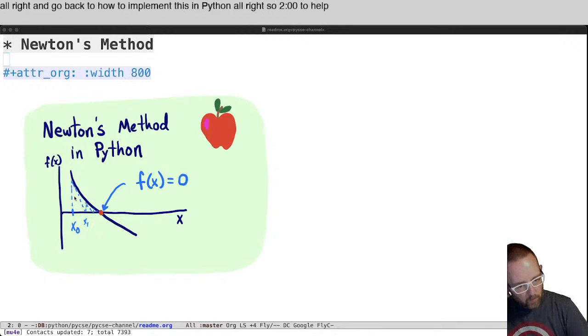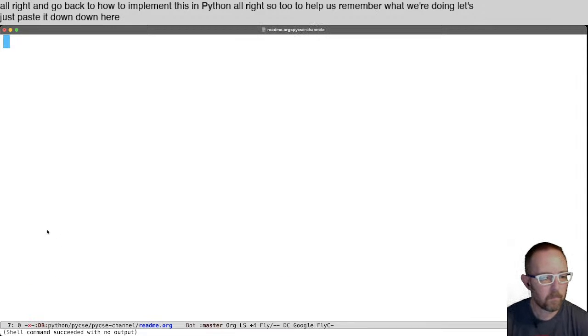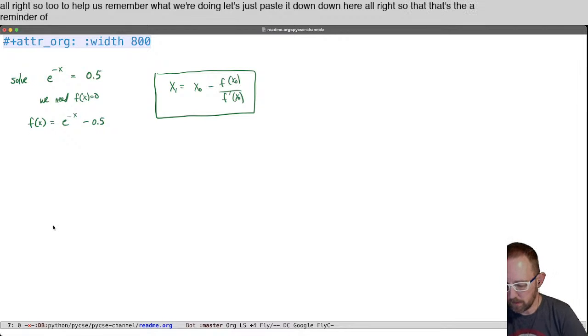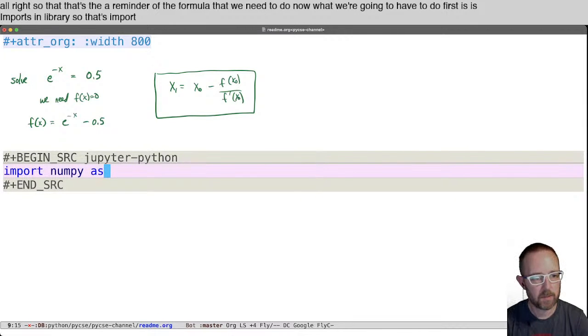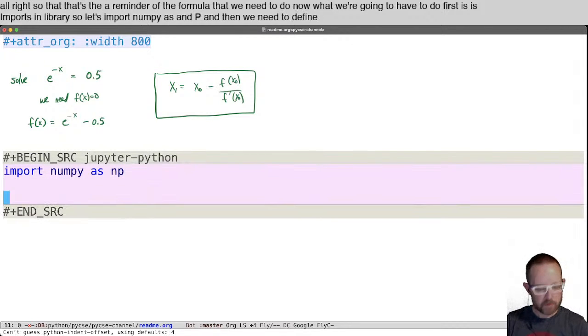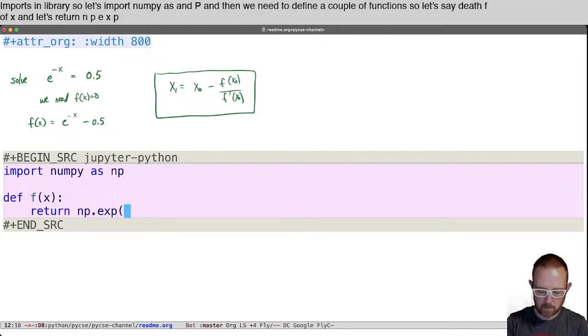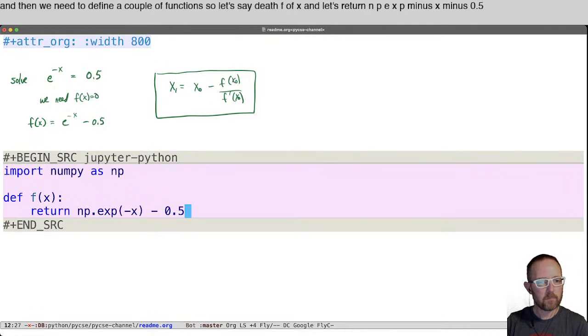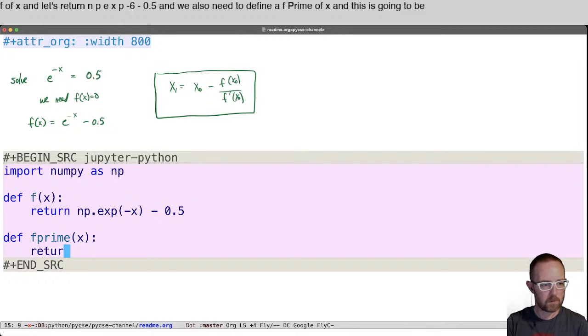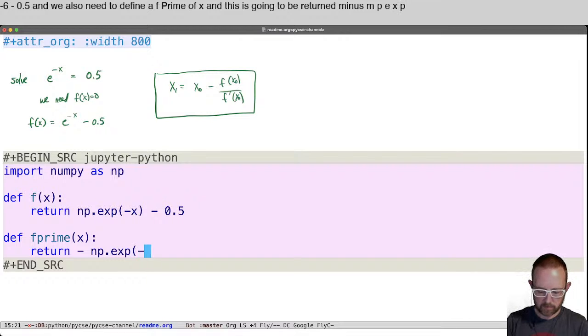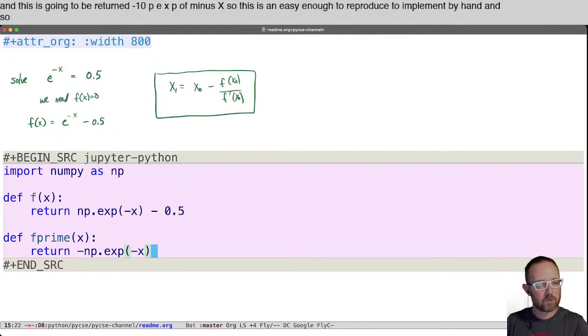All right, so to help us remember what we're doing, let's just paste it down down here. All right, so that that's a reminder of the formula that we need to do. Now what we're going to have to do first is import some libraries. So let's import numpy as np. And then we need to define a couple of functions. So let's say def f of x and let's return np.exp minus x minus 0.5. And we also need to define f prime of x. And this is going to be return minus np.exp of minus x. So this is an easy enough derivative to implement by hand. And so we just put it in.